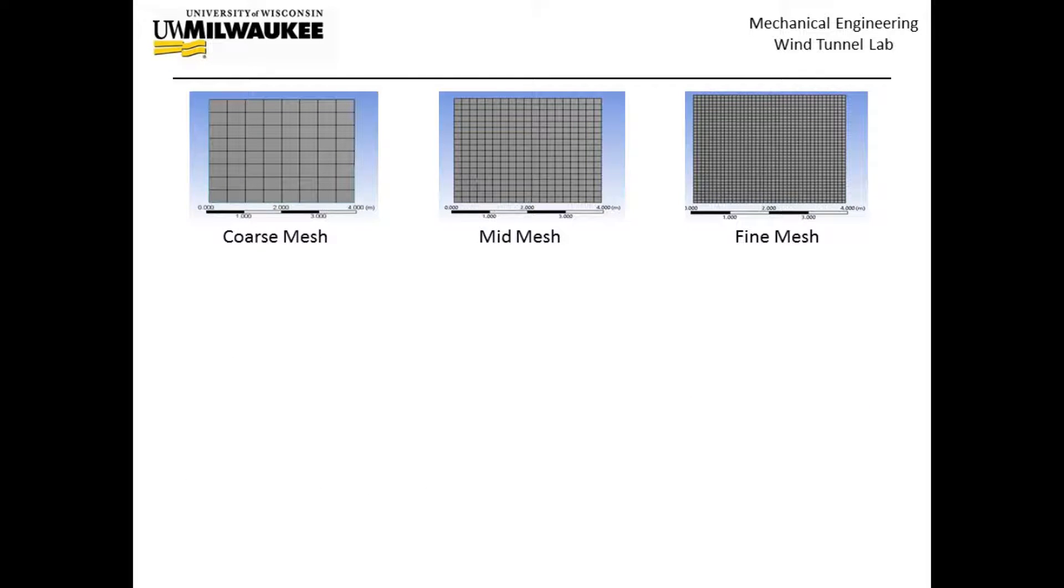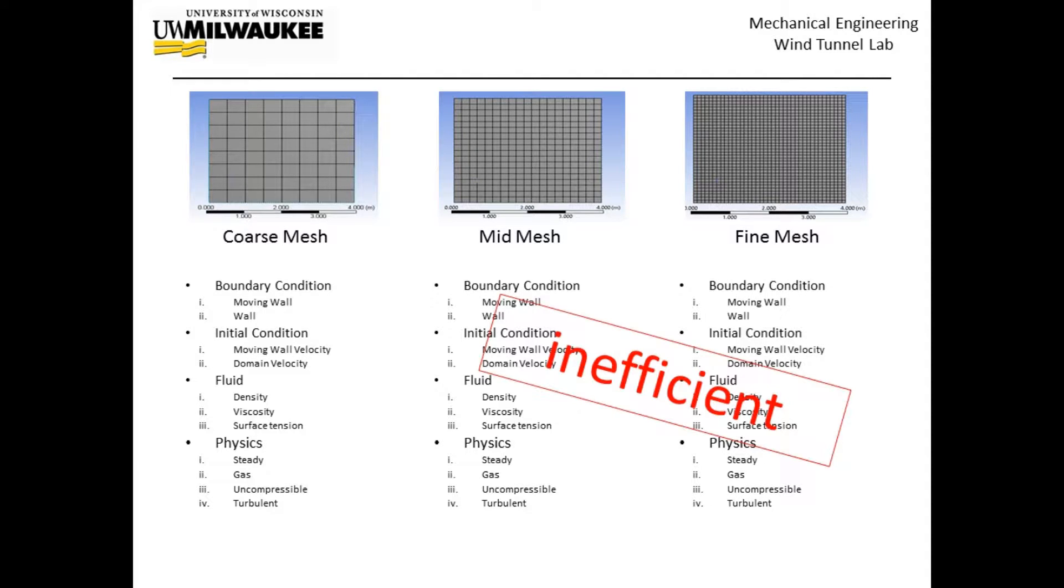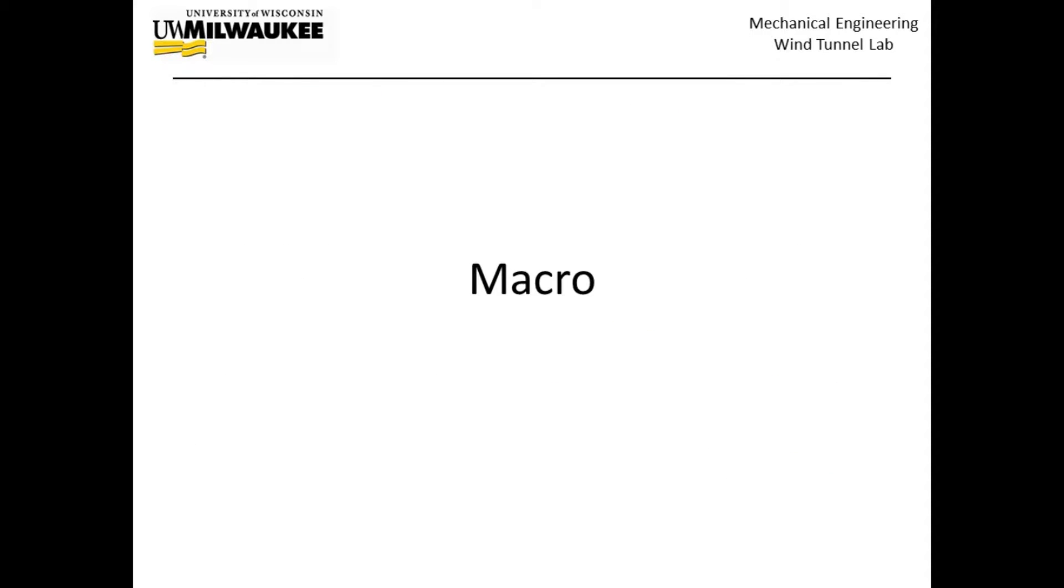So, let's see if we don't have macro and I need to run those simulations. Start from the coarse mesh simulation. We need to do all of those settings of boundary conditions, initial conditions, working fluid, governing equations, etc. And then, if I want to do it in medium mesh, I need to do it again, and do it again in fine mesh setup. And this is inefficient. So, that's why macro is here for us.